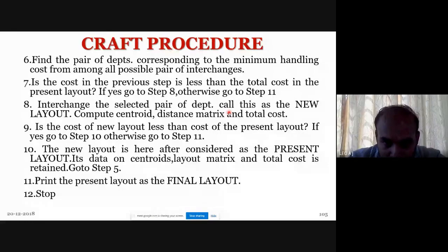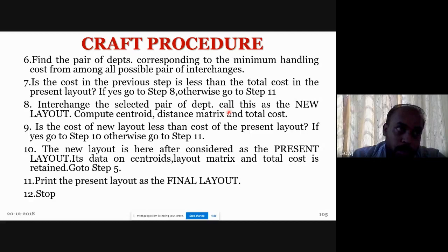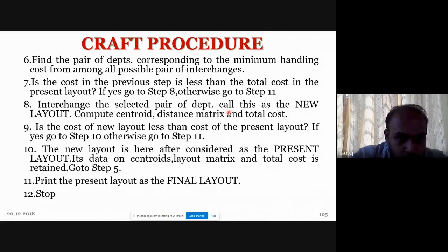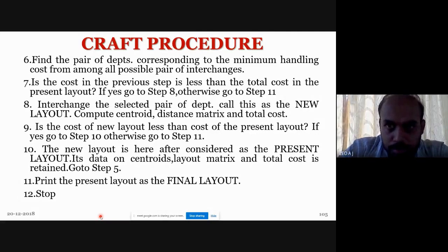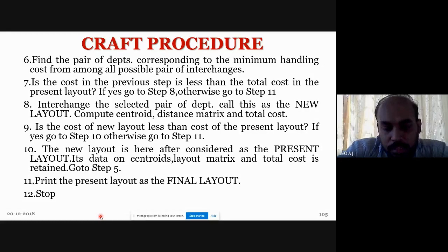Step 10: the new layout is hereafter considered the present layout. The data on centroid, layout matrix, and total cost is retained. Then return to step 5 and repeat the procedure. The final step is to print the final layout, then stop. This is the complete CRAFT procedure.